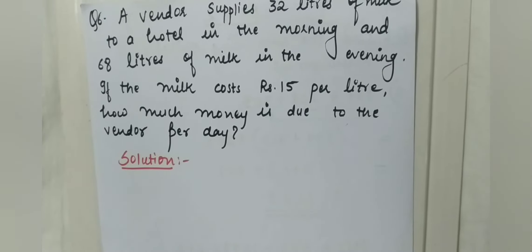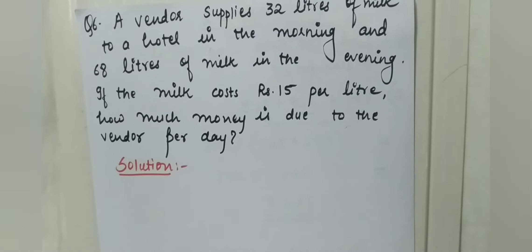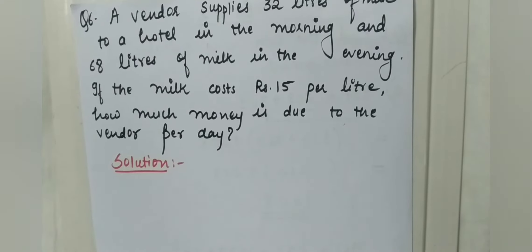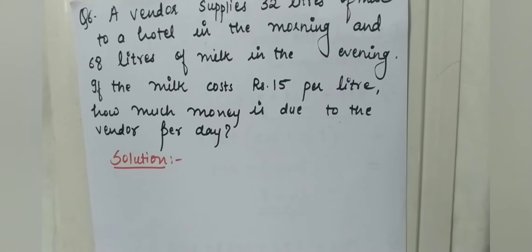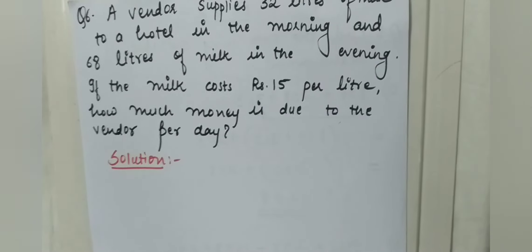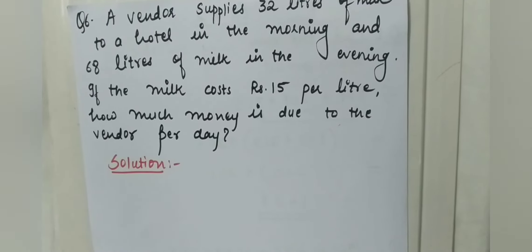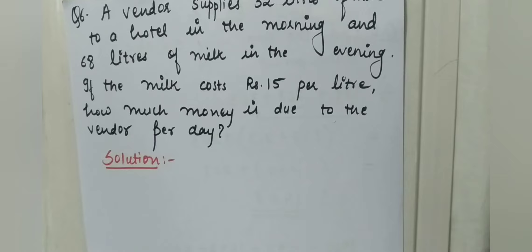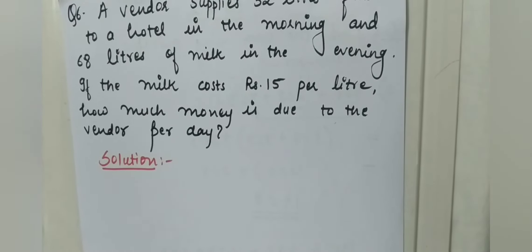Now we will discuss the second word problem. A vendor supplies 32 litres of milk to a hotel in the morning and 68 litres of milk in the evening. If the milk costs Rs 15 per litre, how much money is due to the vendor per day? One vendor is supplying milk to a hotel — 32 litres in the morning and 68 litres in the evening. The cost per litre is Rs 15, and we have to find the total daily cost.